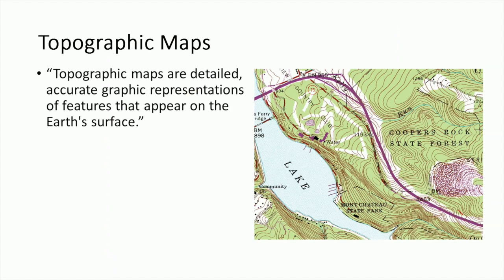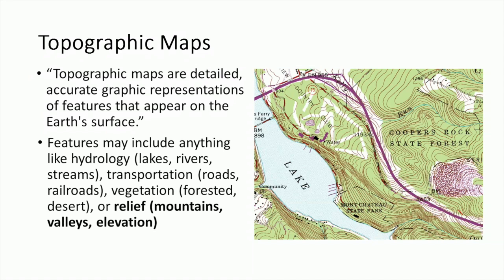Topographic maps are detailed, accurate graphical representations of features that appear on the Earth's surface. Defining features in a topographic map may include things like hydrology, transportation systems, vegetation, and relief. This video focuses primarily on elevation, so we will ignore other features for now. However, it is important to keep in mind that a topographic map may include all or some of these features simultaneously.